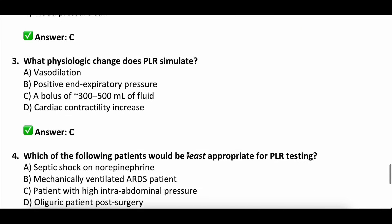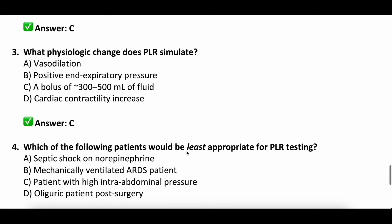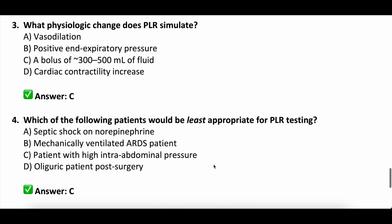Question four: which patient would be least appropriate for passive leg raise testing? A) someone in septic shock on norepinephrine, B) someone mechanically ventilated with ARDS, C) a patient with high intra-abdominal pressures, or D) someone oliguric post-surgery? Correct answer is C. If someone has intra-abdominal hypertension or abdominal compartment syndrome, the abdomen will compress venous structures and you won't get an accurate result from the passive leg raise.